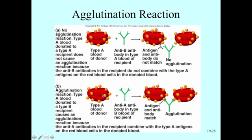If type A blood is donated to a type B recipient, a person who is type B will have A antibodies which would bind to the A antigens and cause a clumping reaction. If we clump our red blood cells, they can't flow properly through our capillaries, and as a result, you are going to have clotting and death. Transfusion reactions or agglutination reactions are very serious and deadly.